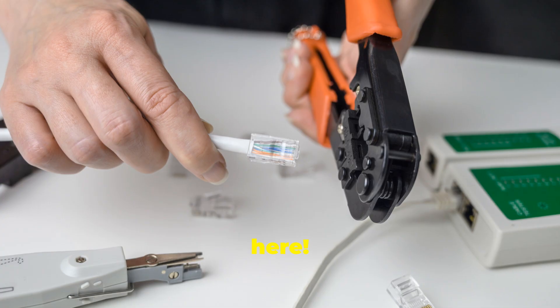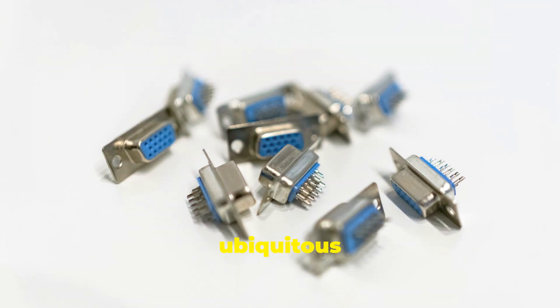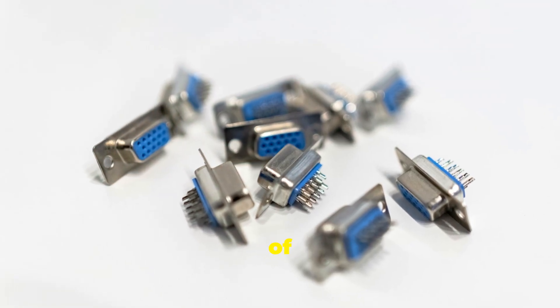Hey everybody, Linus here. Today we're talking about RJ45 connectors, those ubiquitous little plugs that you see on the ends of Ethernet cables. Those little plastic plugs on the end of Ethernet cables might seem small, but they play a huge role in our daily internet usage.